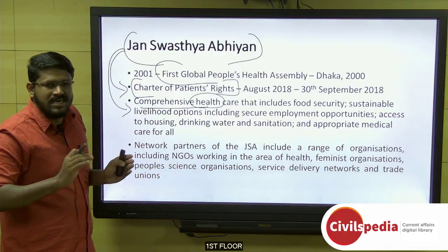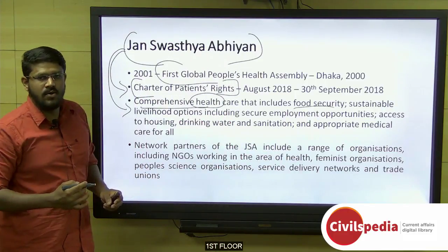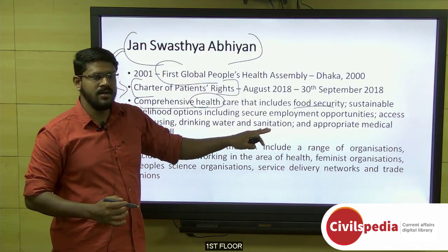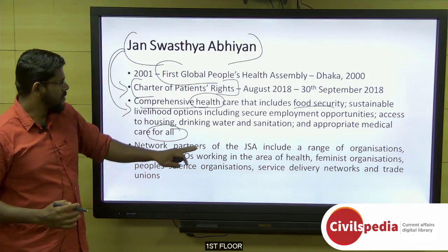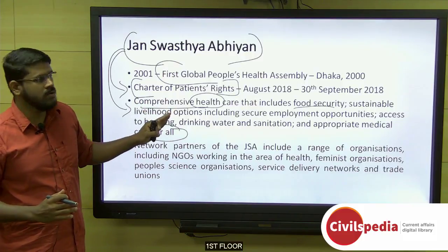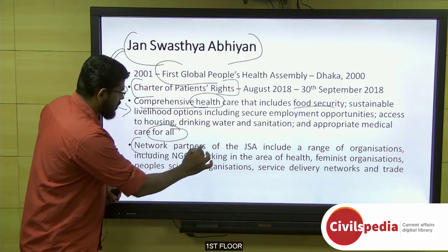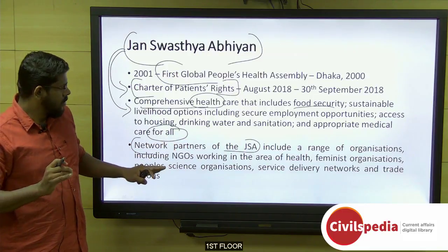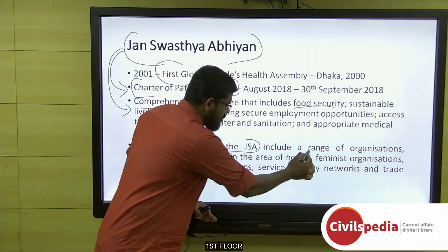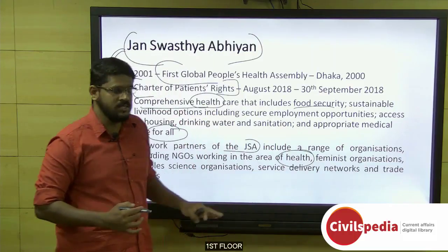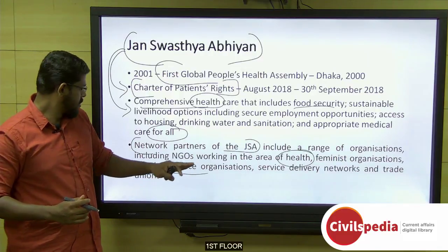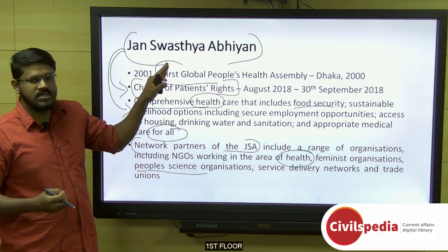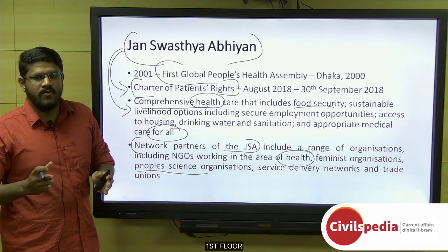According to Jan Swasthya Abhiyan, comprehensive health care includes not just the term health, but also food security, sustainable livelihood options by securing employment opportunities, and access to housing, drinking water, sanitation, and appropriate medical care for all. Regarding its network partners, this national platform includes not just NGOs or networks working in health, but also those from feminist organizations, people's science organizations, service delivery networks, and trade unions as well.